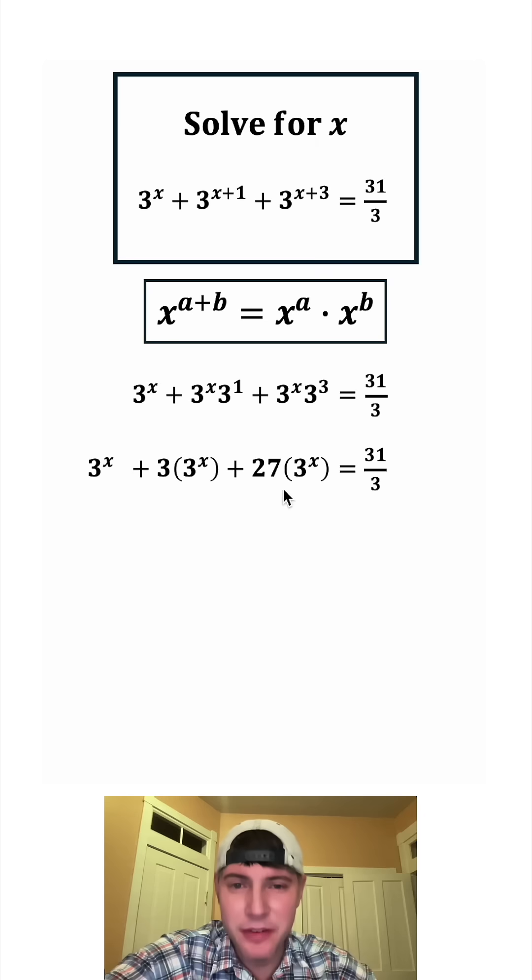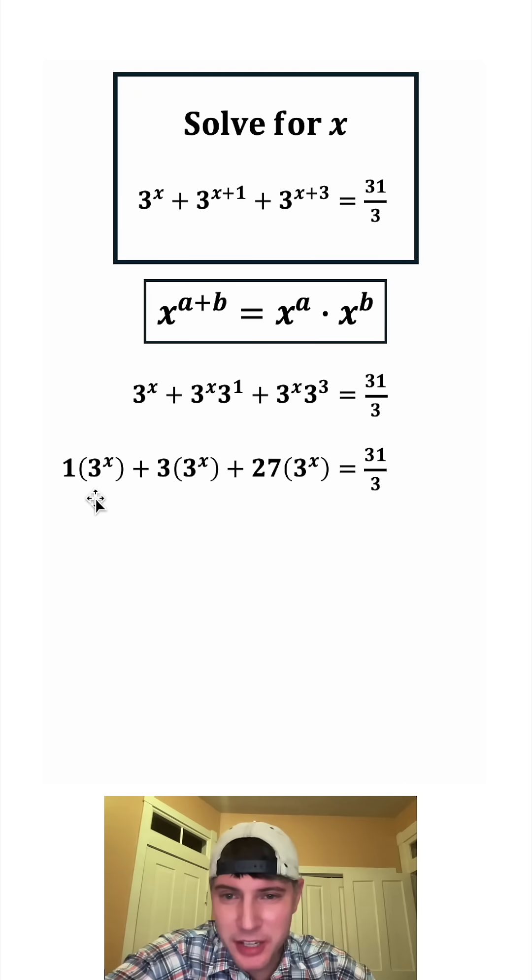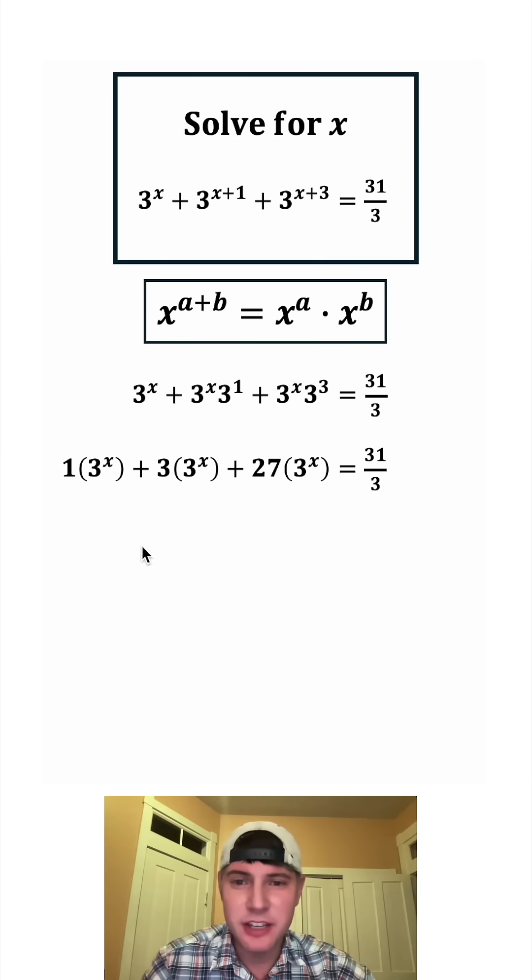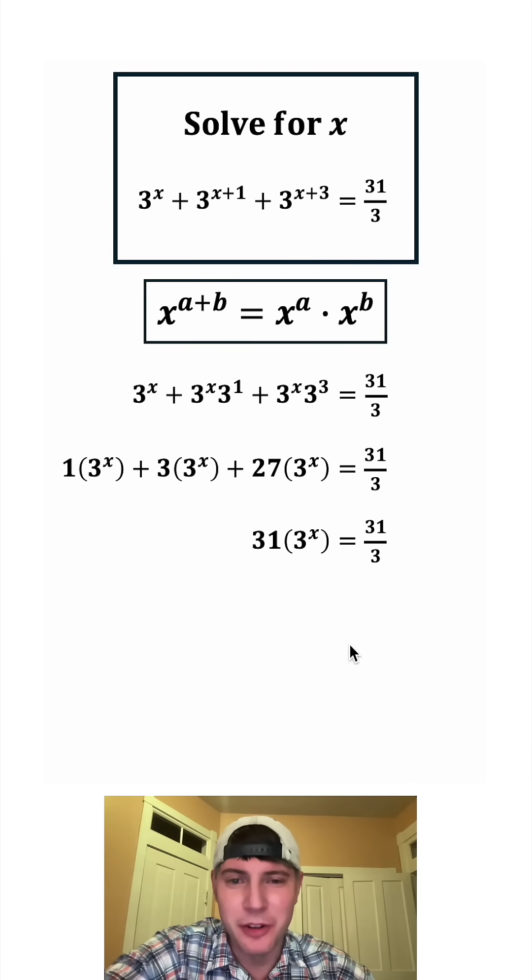So this is like 27 3 to the x's. And this is 3 3 to the x's. And this would end up being 1 3 to the x. So ultimately we have 1 3 to the x plus 3 3 to the x plus 27 3 to the x. These are going to add up to give us 31 3 to the x's. And that's still going to be equal to 31 thirds.